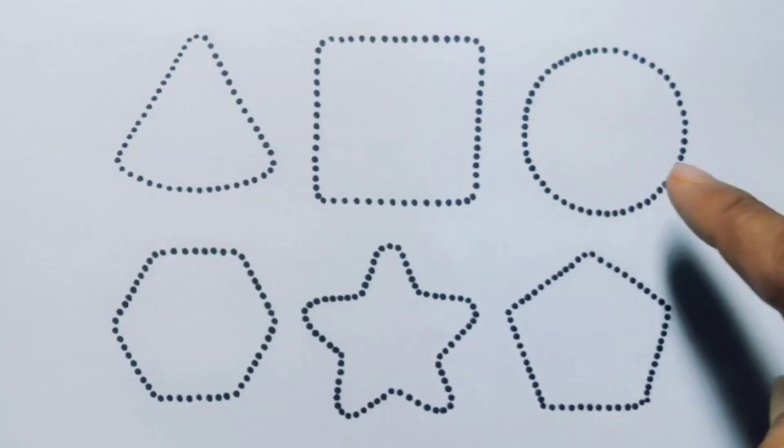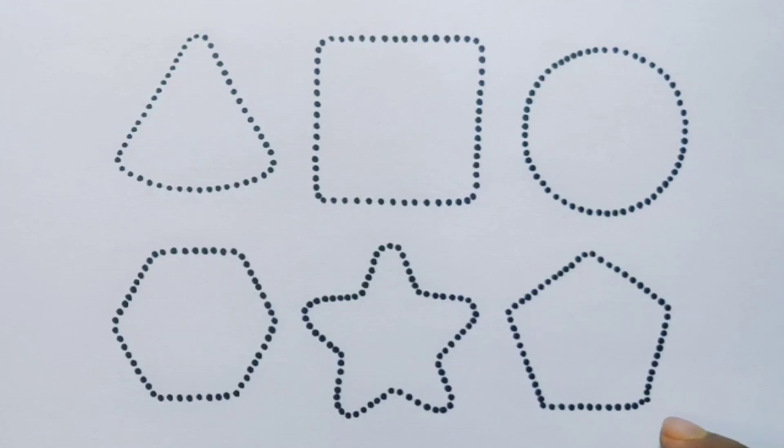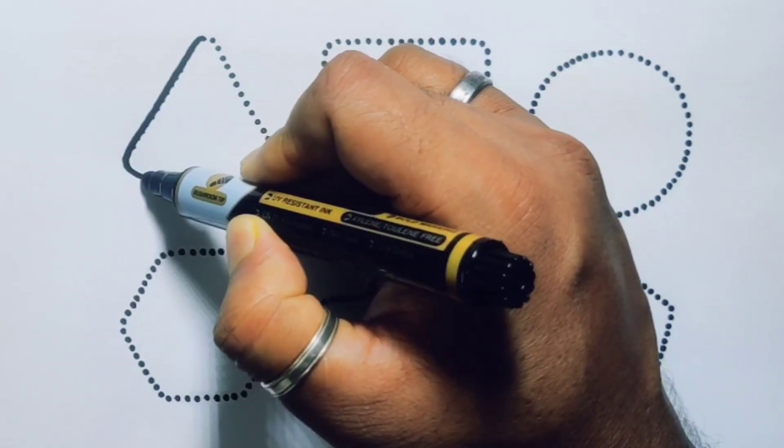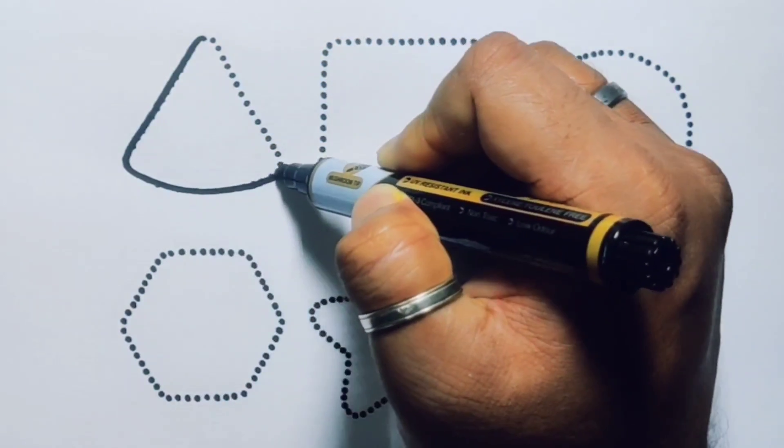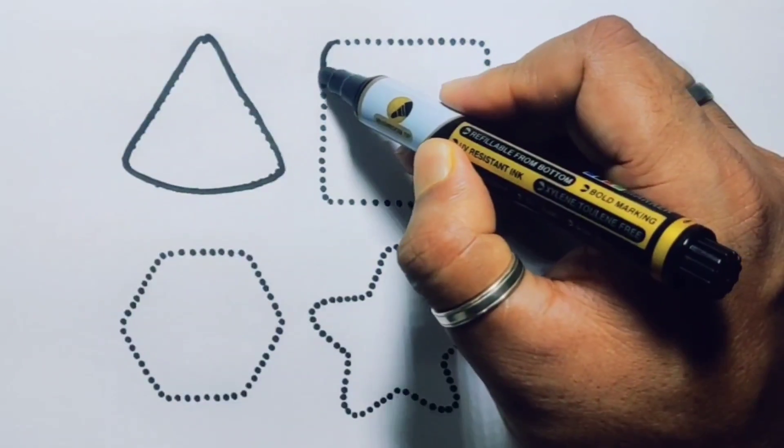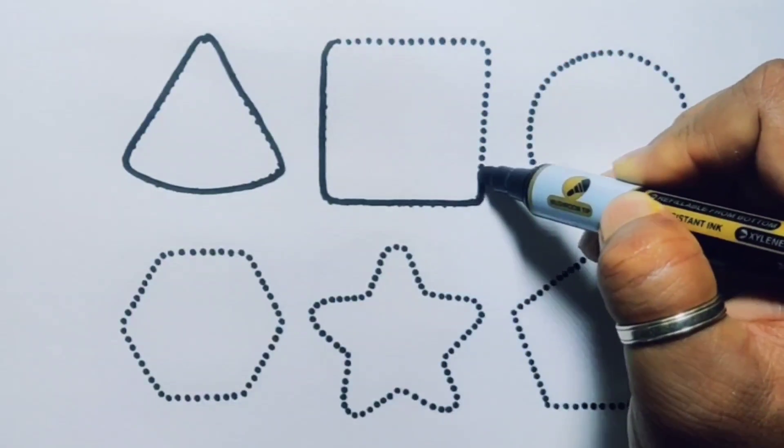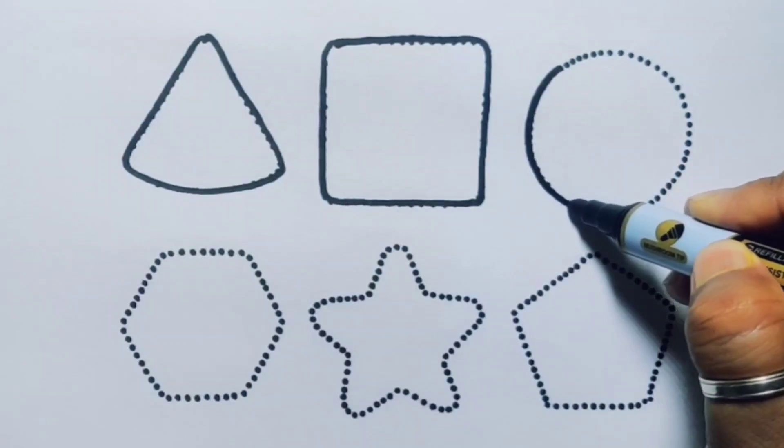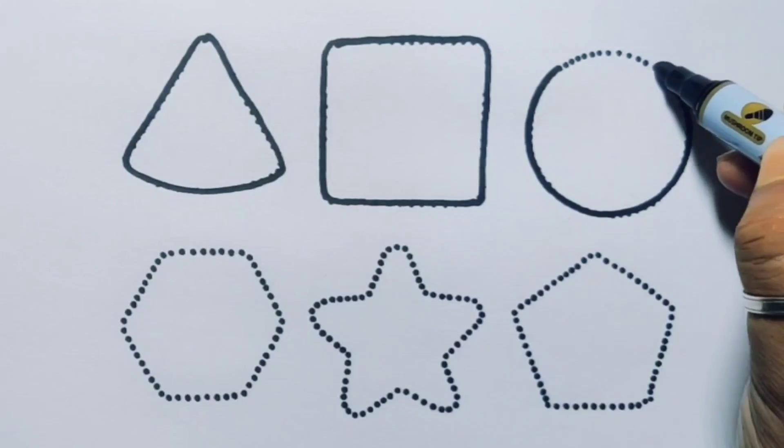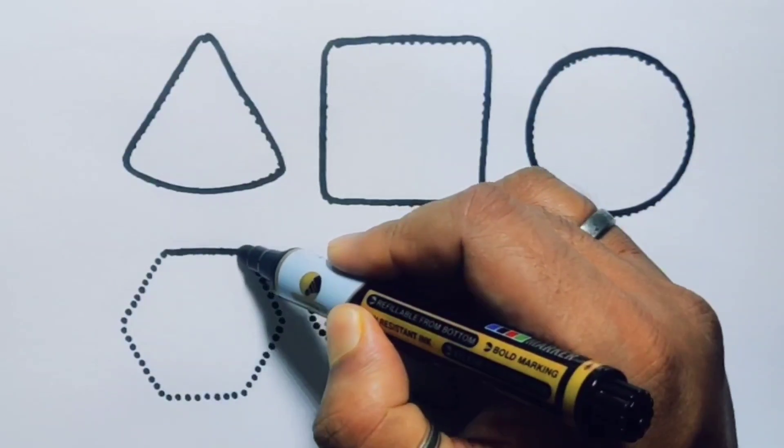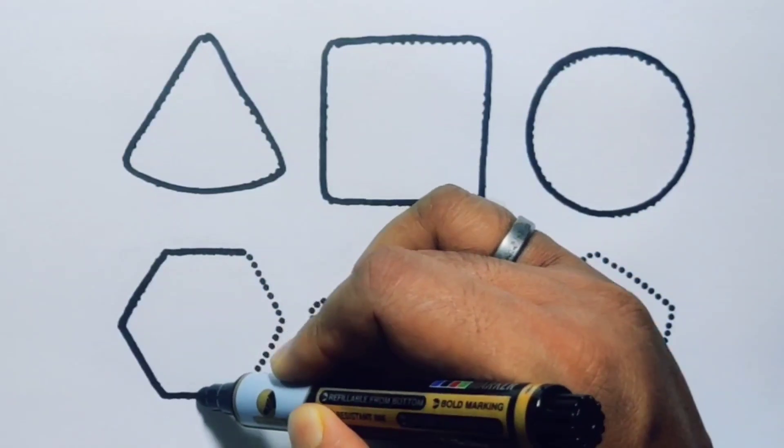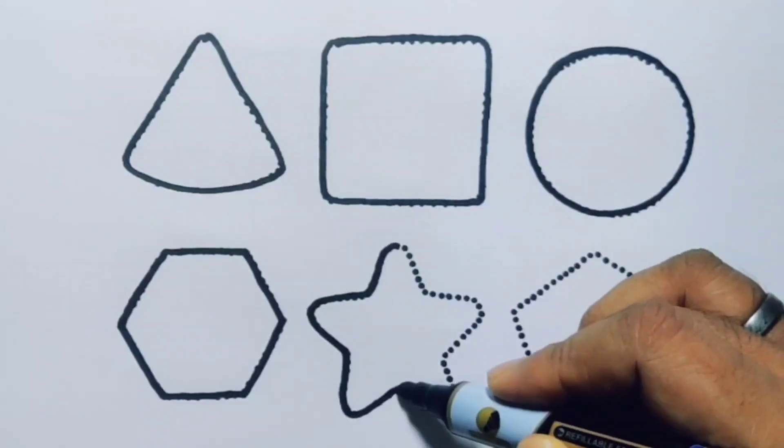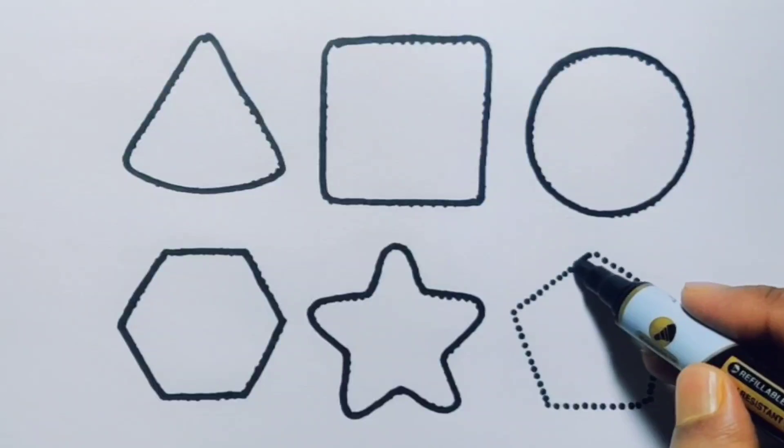Triangle, square, circle, hexagon, star, and pentagon. First, you're going to draw the 2D shapes: triangle, square, circle, hexagon, star, pentagon.